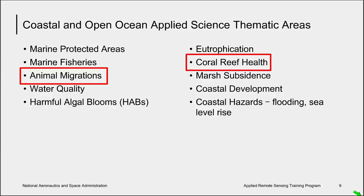Last week I presented some examples of tools that address these themes. These tools incorporate remote sensing data and models to address questions in applied science. One example was the HAB tracker tool, which can predict landfall of blooms of the toxic cyanobacterium Microcystis in Lake Erie in North America. For the purpose of this webinar series, we will focus on animal migrations and coral reef health, which will be the topics of the week three and week four sessions.